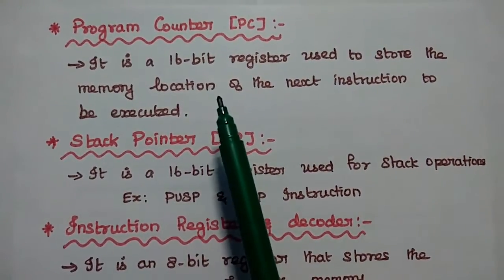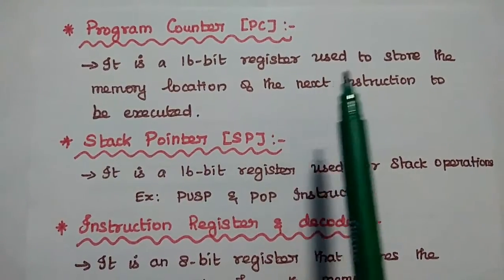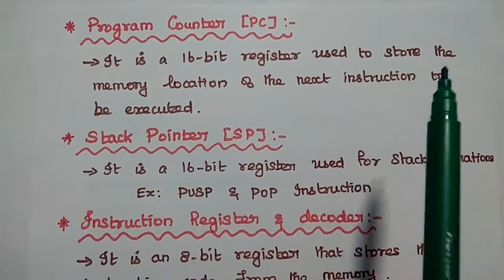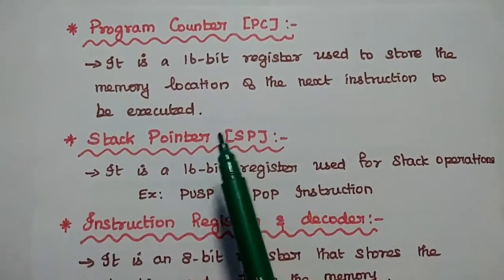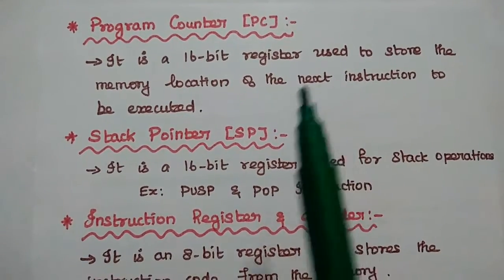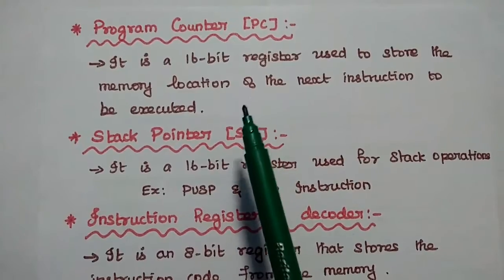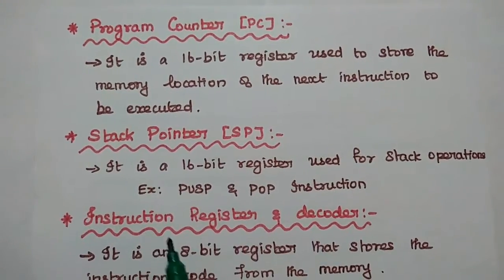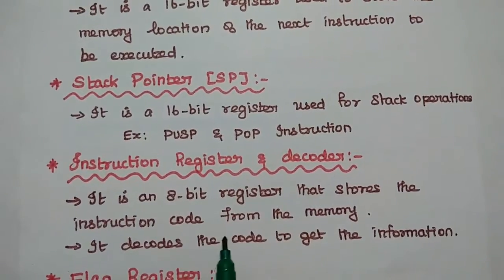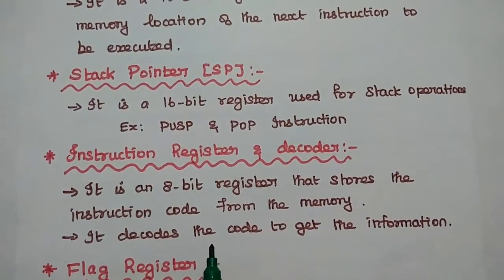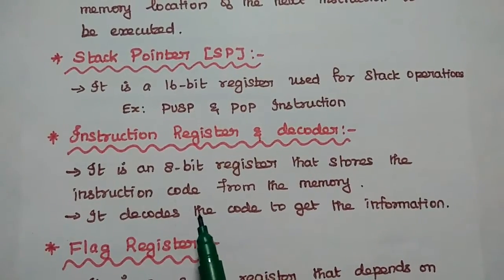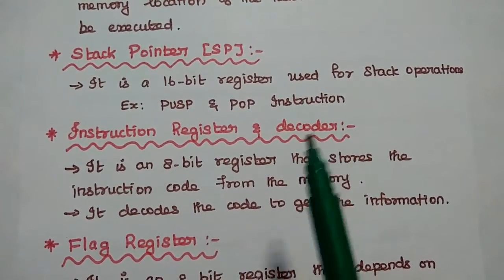The program counter is a 16-bit register used to store the memory location of the next instruction to be executed. The stack pointer (SP) is a 16-bit register used for stack operations, such as executing PUSH and POP instructions.